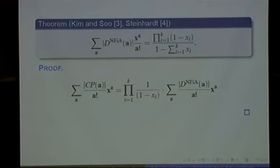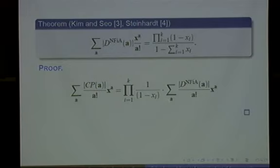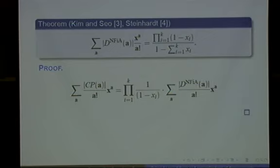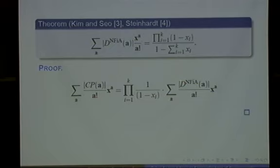In the previous case we can insert zero or one fixed point, so we multiply by one plus x_i. In the ascending case, we can insert an arbitrary number of fixed points in each block right here. So this is the part — the denominator part — and this is the nominator. Here we saw the generating function for no fixed point in ascending order. By analyzing this generating function we can find the generating function for NFIA and NFID. It is not hard to find the generating function for the mixed order: in each case, if we prescribe each block as descending or ascending, it's very easy.